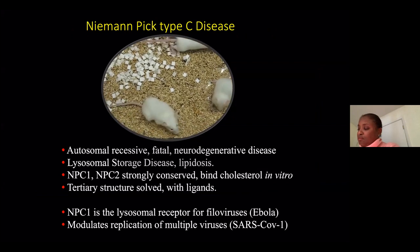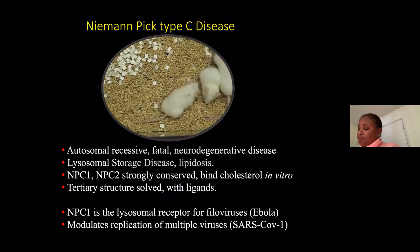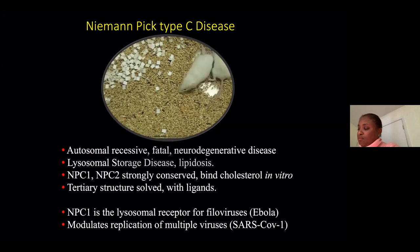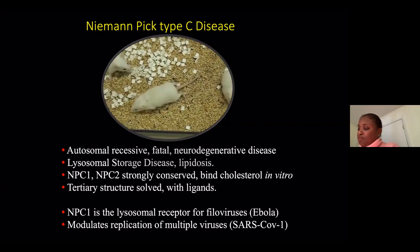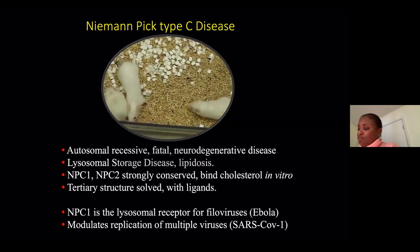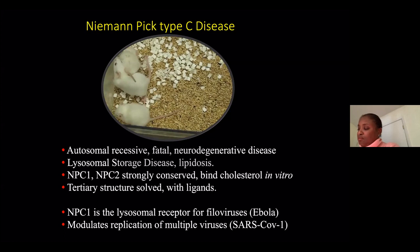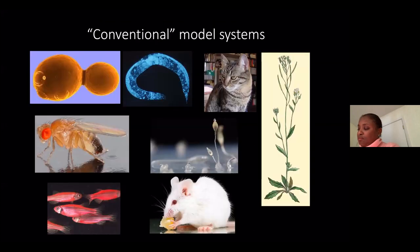We're lucky enough to have several animal models — shown here is the mouse model we use in the lab. Niemann-Pick type C disease is an autosomal recessive, fatal neurodegenerative disease — a classical lysosomal storage disease which results in a lipid accumulation in the lysosome. Two genes account for the disease, primarily mutations in NPC1. The tertiary structure of both proteins has been solved with their ligands, so we know a great deal about the mechanism. NPC1 is also, it turns out, the lysosomal receptor for filoviruses, particularly Ebola, and it also seems to modulate the replication of multiple viruses, particularly envelope viruses, including SARS-CoV-1 and, we presume, SARS-CoV-2. This gene is expressed in all cells of the body and is found in almost every eukaryote that's been sequenced, so these model systems are very readily available to us.